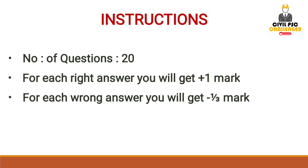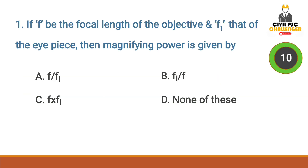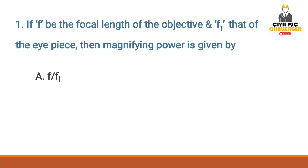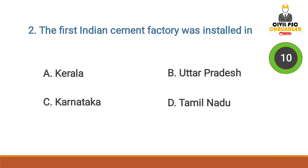If the focal length of the objective is f and f1 that of the eyepiece, then magnifying power is given by — answer option A: f by f1. Next question: the first Indian cement factory was installed in...